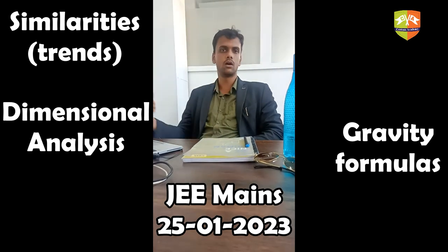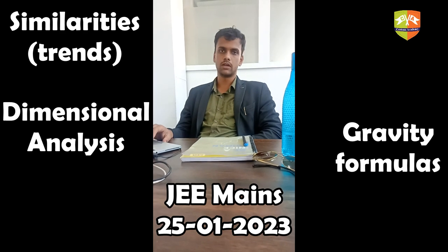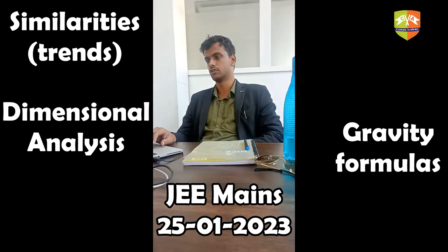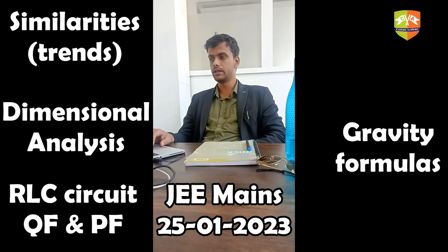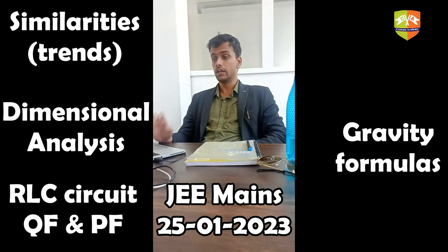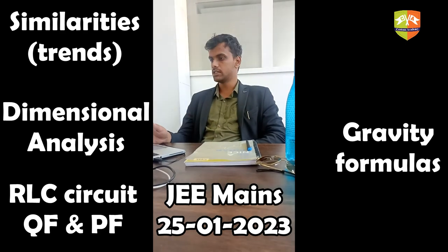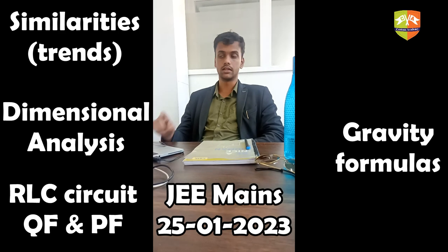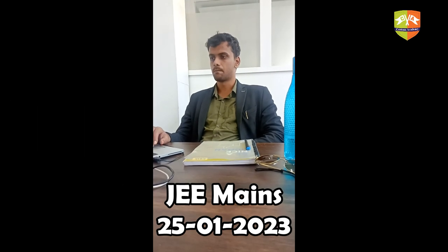I think this is a pattern we will see throughout the main series — you will definitely get one question from dimensional analysis, so that is four marks you need to ensure for yourself. Another similarity is that power factor and quality factor: one of these two is going to be asked in every paper, it seems. I am seeing a question on power factor or quality factor of an RLC circuit in every single paper so far.